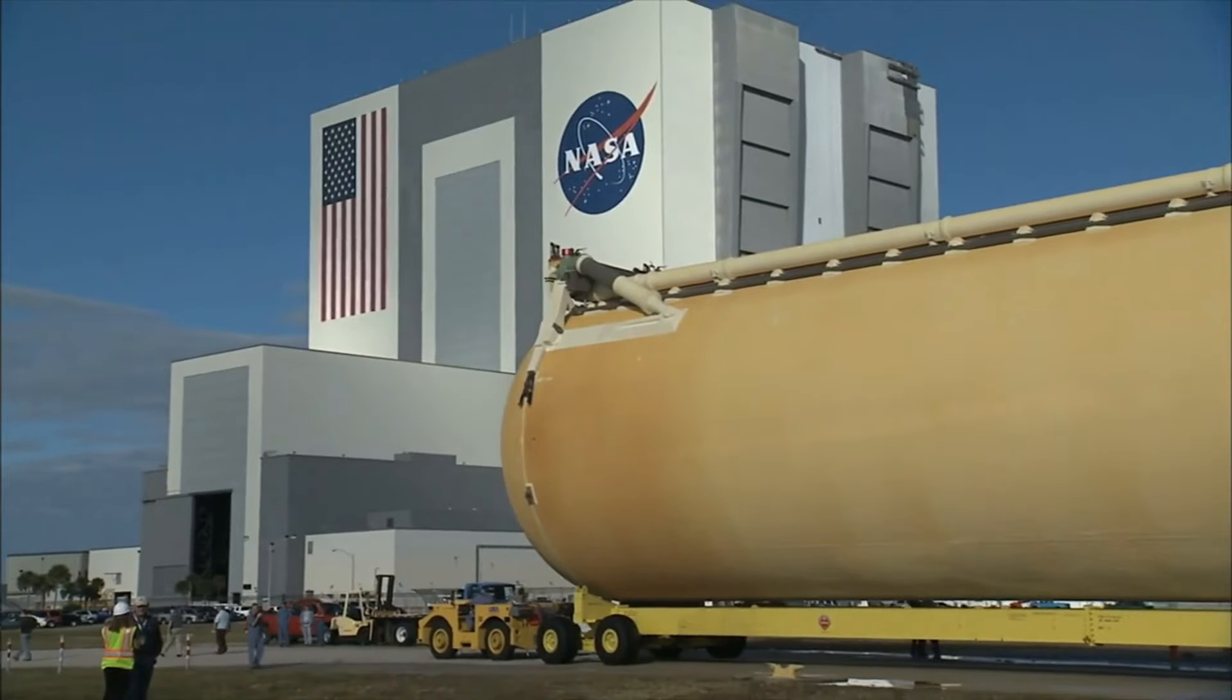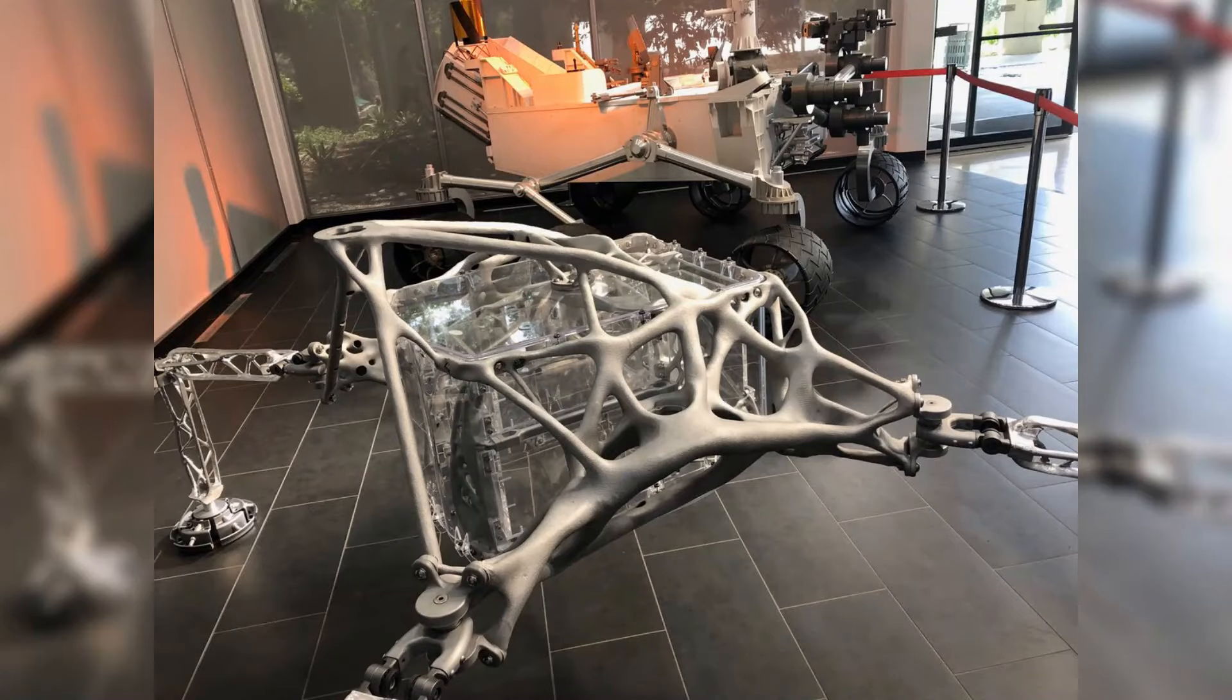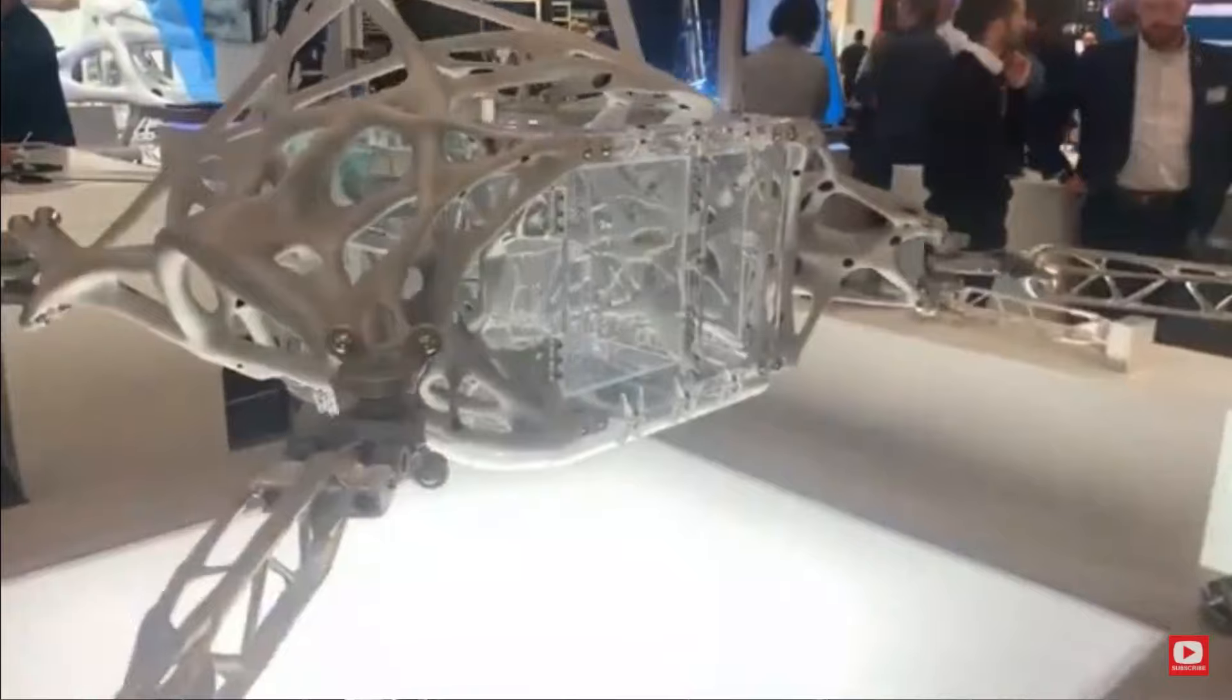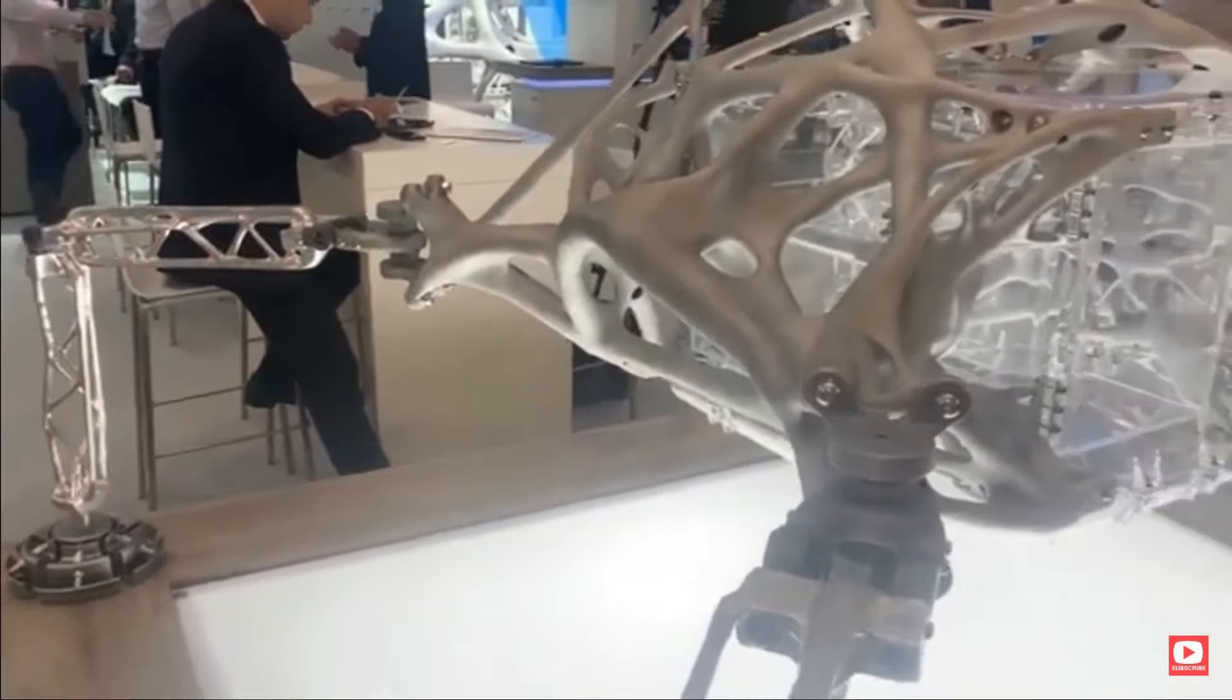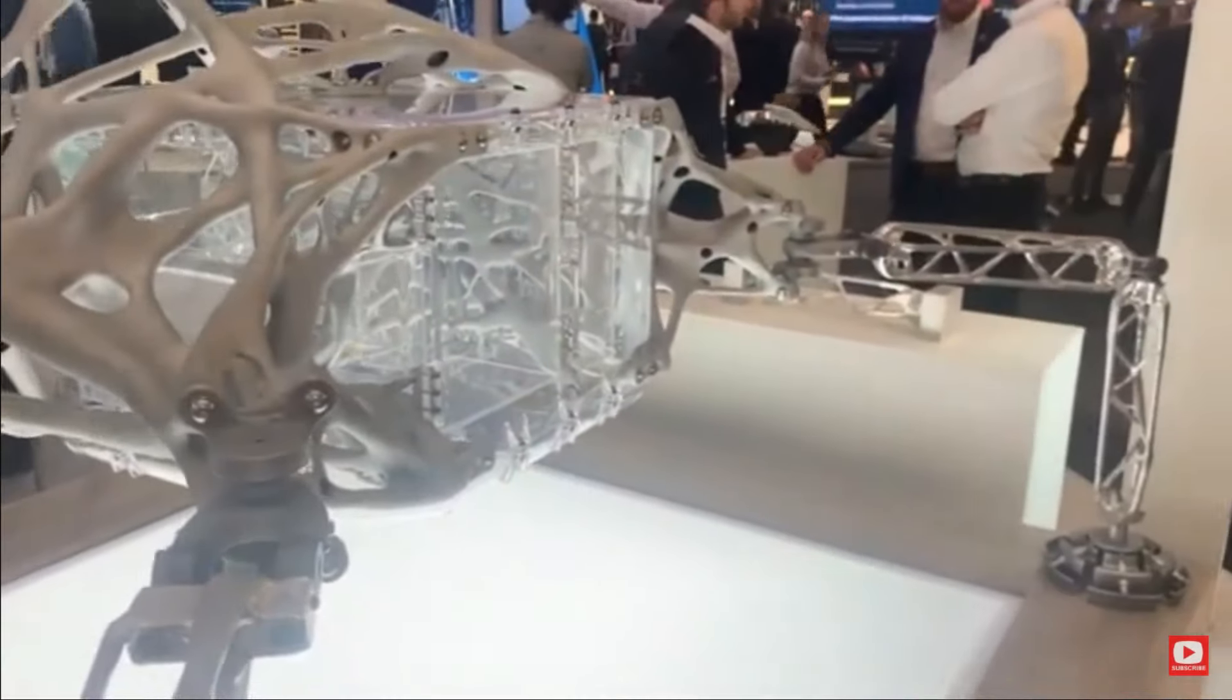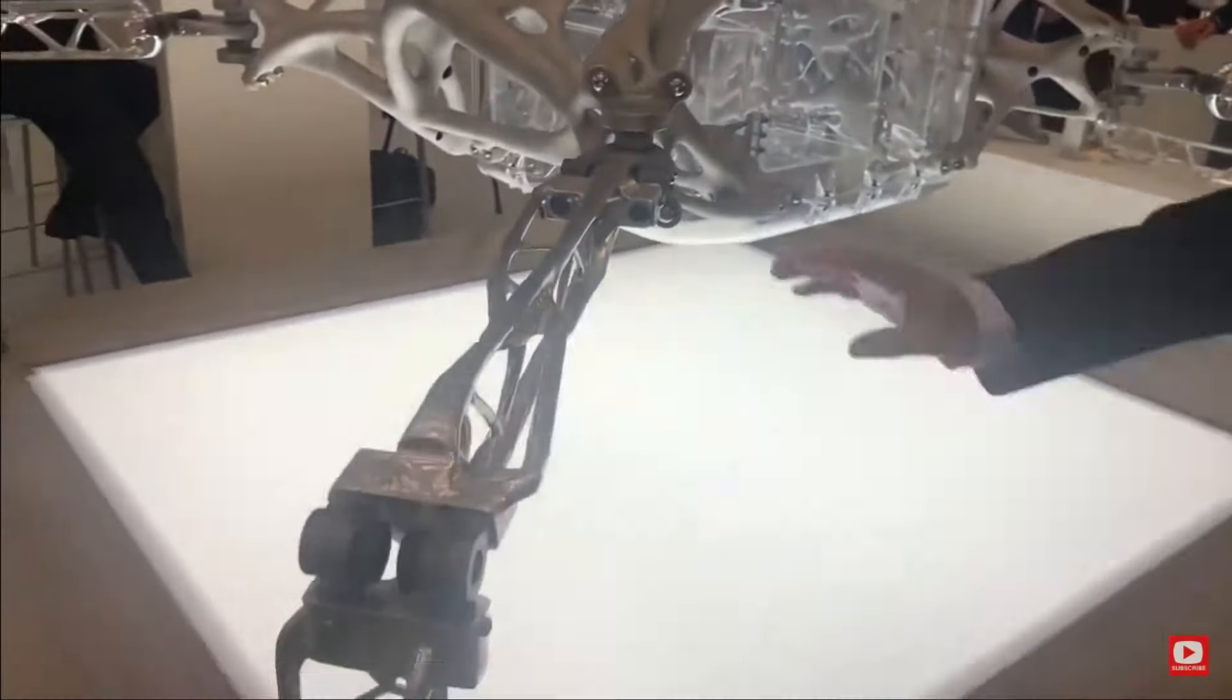NASA is also working on it. The lander for the missions to the moons of Jupiter and Saturn have been developed using Generative Design. The lander's legs are 35% lighter than previous human-made designs.